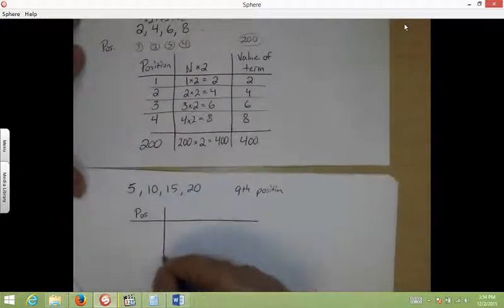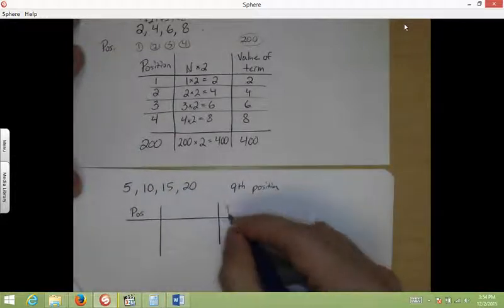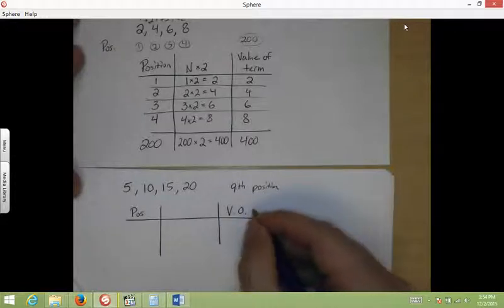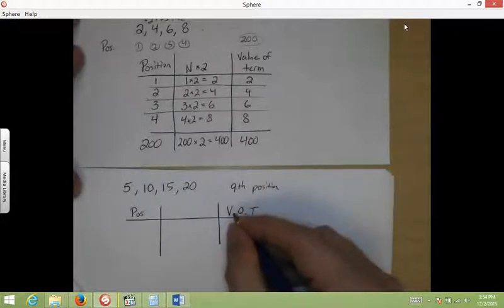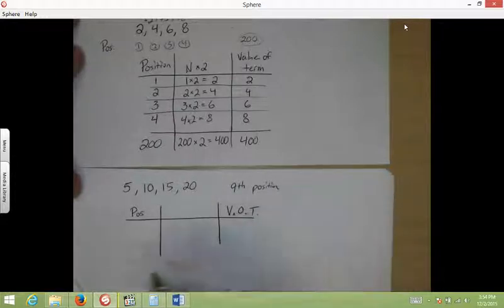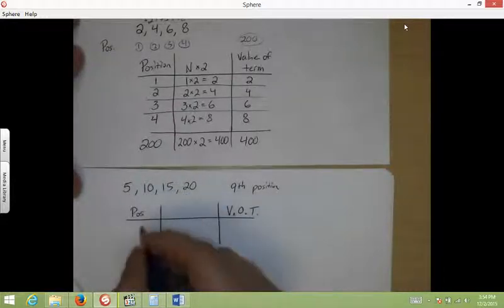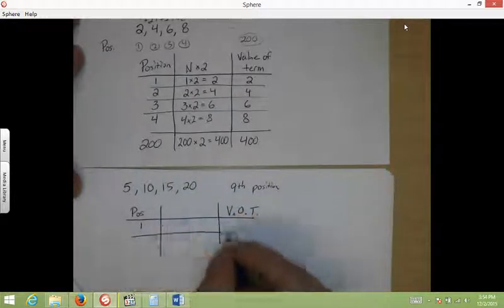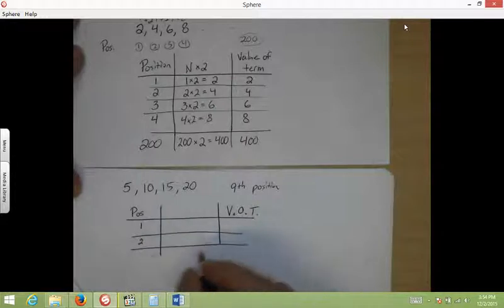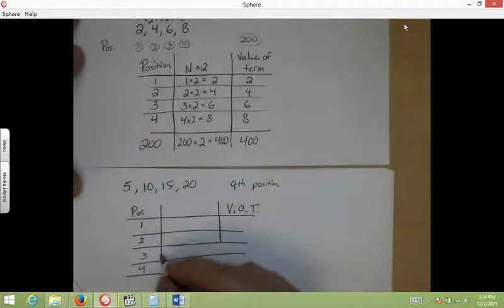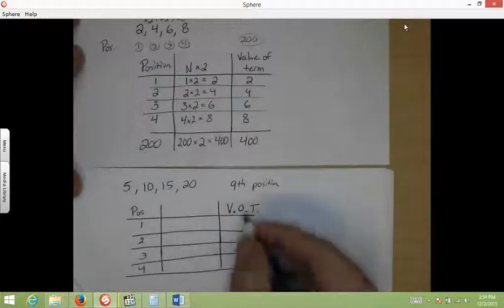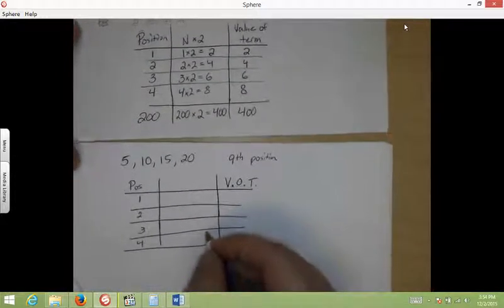So let's make a little chart here. Position. Here's the value of the term. First of all, I've got four terms, I'm sorry, four positions right here. So, 1, 2, 3, 4, and I'm trying to find out what's in position 9.